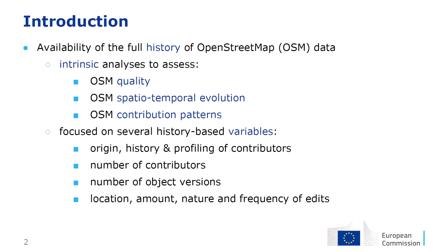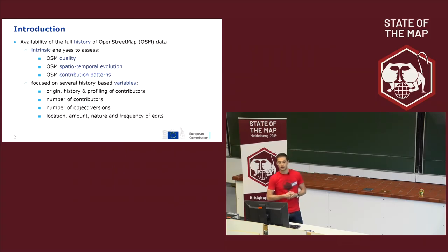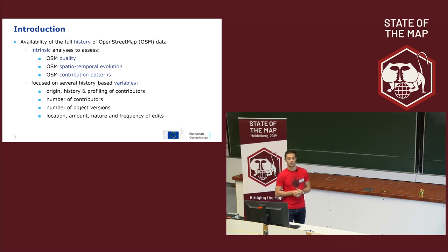We all know that compared to traditional geospatial data sources, one of the major advantages of OpenStreetMap is the availability of the full history of the data. In literature, the history has been traditionally used for many purposes — mainly the so-called intrinsic quality assessment, which means assessing quality not through comparison against some external reference dataset, but by only looking at OSM itself, in particular the history. OSM history has also been used to study temporal evolution and OSM contribution patterns.